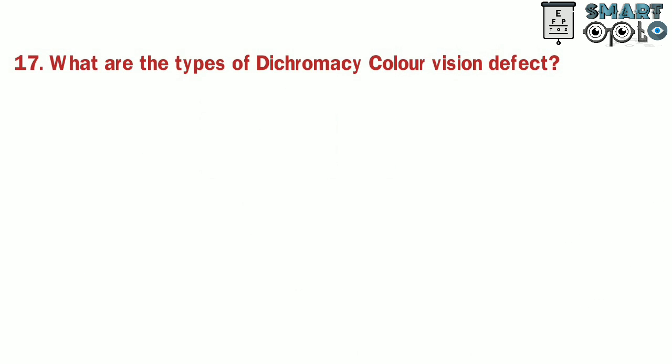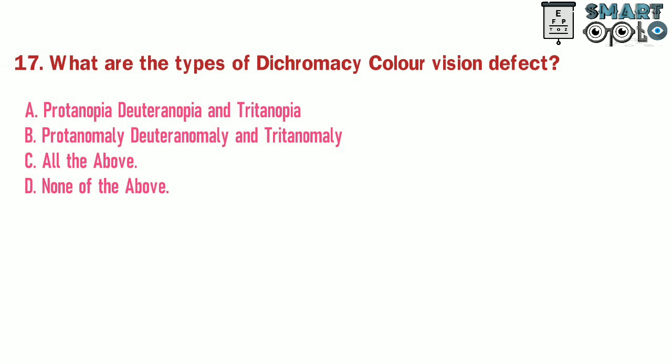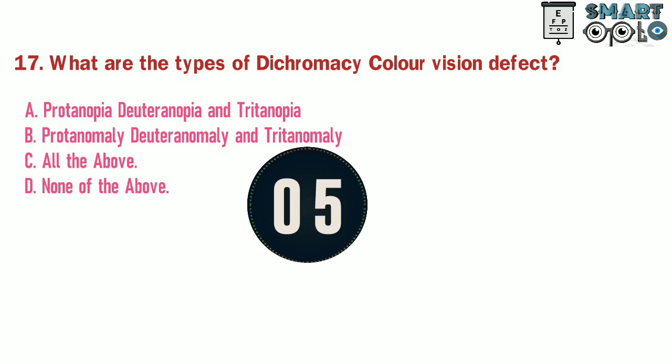Question 17. What are the types of dichromacy color vision defect? A. Protanopia, deuteranopia, and tritanopia. B. Protanomaly, deuteranomaly, and tritanomaly. C. All of the above. D. None of the above.